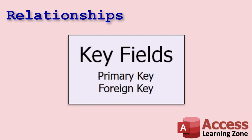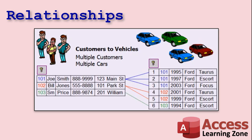There are two types of key fields: a primary key and a foreign key. The primary key in the customer table is the customer ID — 101, 102, 103. Since that's the primary key in the customer table, it becomes the foreign key in the vehicle table. That key indicates which customer owns each car. The vehicle table also has its own primary key — an auto-number starting at 1, 2, 3. For example, the 2003 Ford Focus is vehicle number 3, and it belongs to customer 101, Joe Smith.